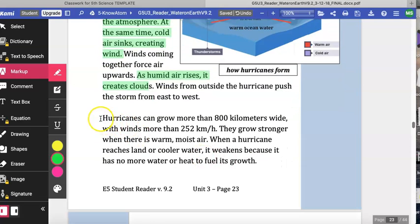Hurricanes can grow more than 800 kilometers wide, with winds more than 252 kilometers per hour. They grow stronger when there is warm, moist air. When a hurricane reaches land or cooler water, it weakens because it has no more water or heat to fuel its growth.